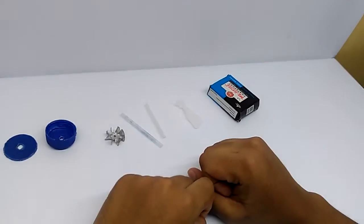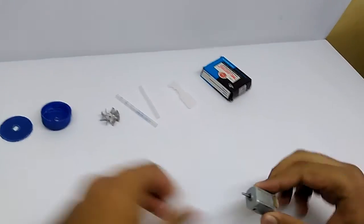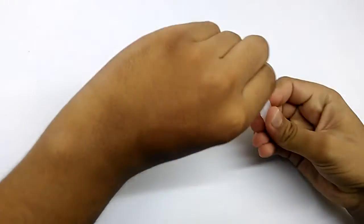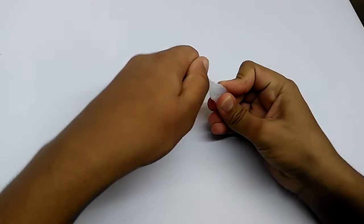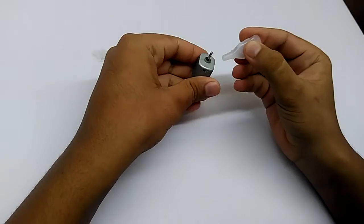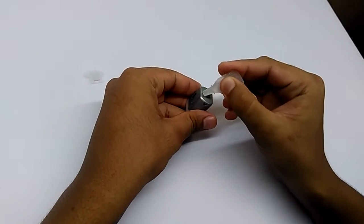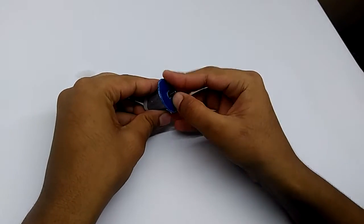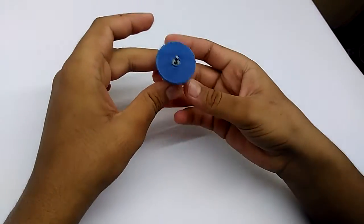Now to make this we will require a DC motor. I will take this plastic sheet and some super glue and stick the plastic sheet over here like this. Now I have fixed this over here.